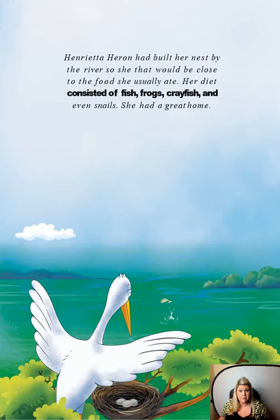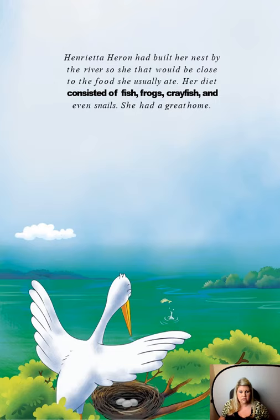Henrietta Heron had built her nest by the river so she would be close to the food she usually ate. Her diet consisted of fish, frogs, crayfish, and even snails. She had a great home. You can see Henrietta looking at the water — see that fish jumping out? And see Henrietta's nest with those eggs? Let's see what happens next.